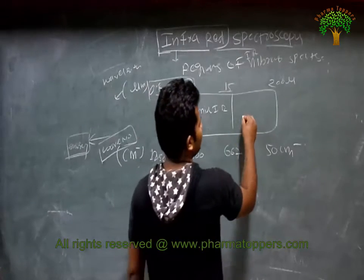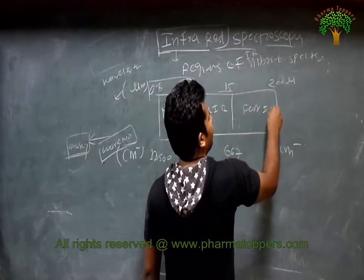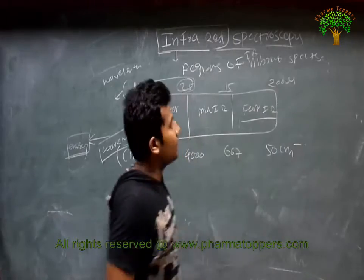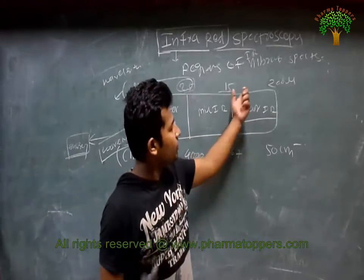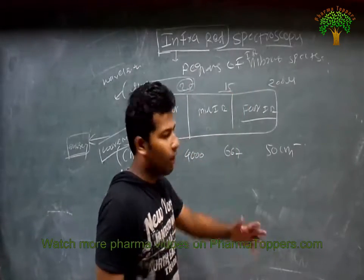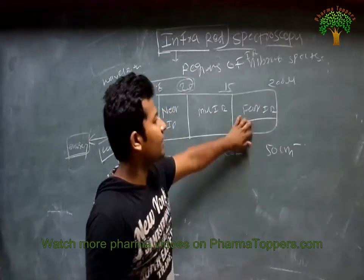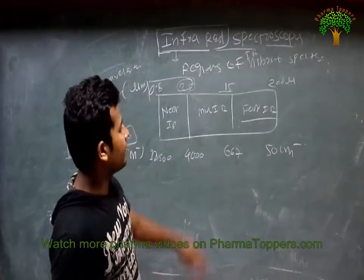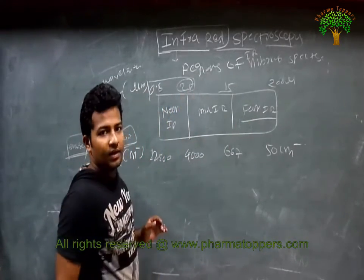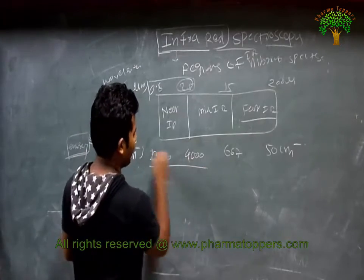In this case, the mid IR region is called IR. Far IR is situated between 15 to 200 microns, or more than 200 microns. The wavenumber and wavelength units both apply. This is the wavenumber unit, and this is in the case of wavelength.